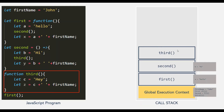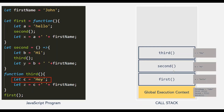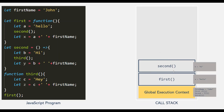So all these execution contexts together make up the call stack. Inside this third function, we are declaring the variable c. So variable c will be stored in the execution context of the third function. We are also declaring the variable z, which will also get stored in the execution context of the third function. So here, the third function has done all its work — the execution of the third function is complete. And once the execution of a function is complete, its execution context will pop off from the call stack. So the execution context of this third function will pop off from the execution stack.